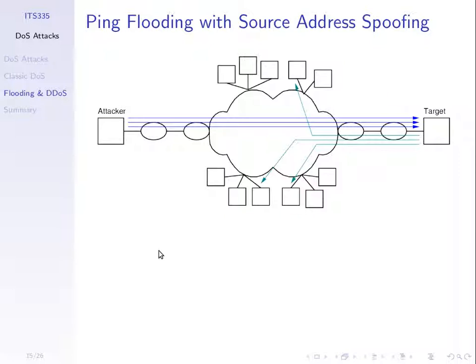If fake addresses are not filtered by the ISP, attackers can send echo requests to the target with a fake source address, trying to overflow it. Any replies will go to random computers on the internet — not back to the attacker — and the target cannot quickly identify who is attacking.